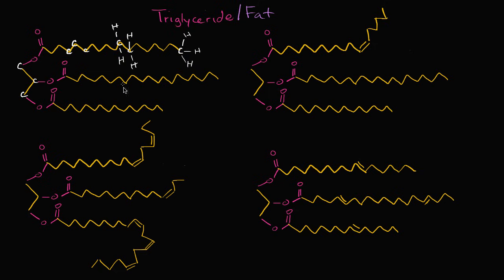The carbons and hydrogens are all there — they're just implicit. Now I encourage you to pause and think about what the difference is between these four triglycerides. What jumps out is that this triglyceride has no double bonds, this one has one double bond, this one has several double bonds, and this one also has several double bonds. But those last two are also different from each other — one kinks and curves, while the other stays relatively straight. That is actually the main difference, and we'll talk about why in a second.